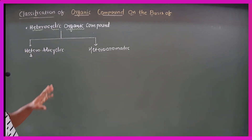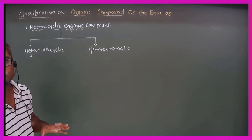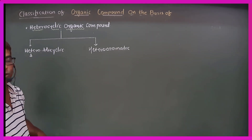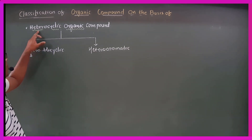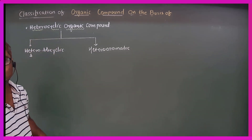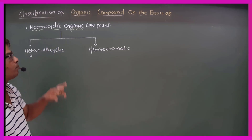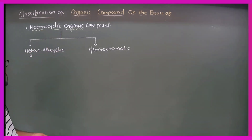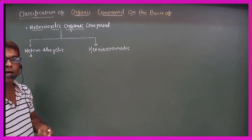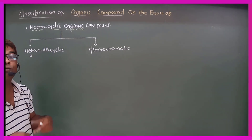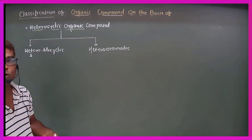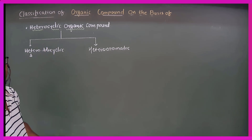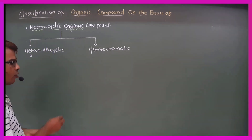Classification of organic compounds is based on structural formula. Here we focus on heterocyclic organic compounds. These are cyclic compounds in which rings are made up of carbon atoms along with some heteroatoms, such as oxygen, nitrogen, phosphorus, and sulphur.